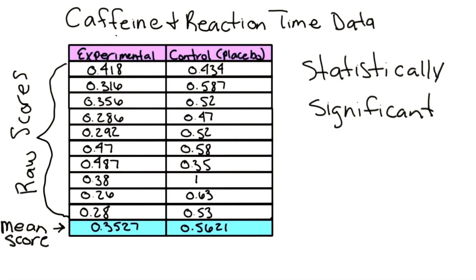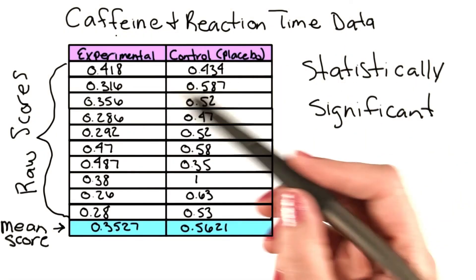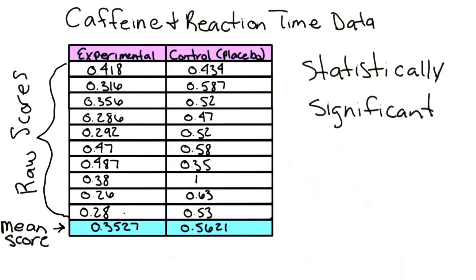We just mentioned the mean, which is another statistical tool that we use in psychological experiments. The mean is the average of all scores.